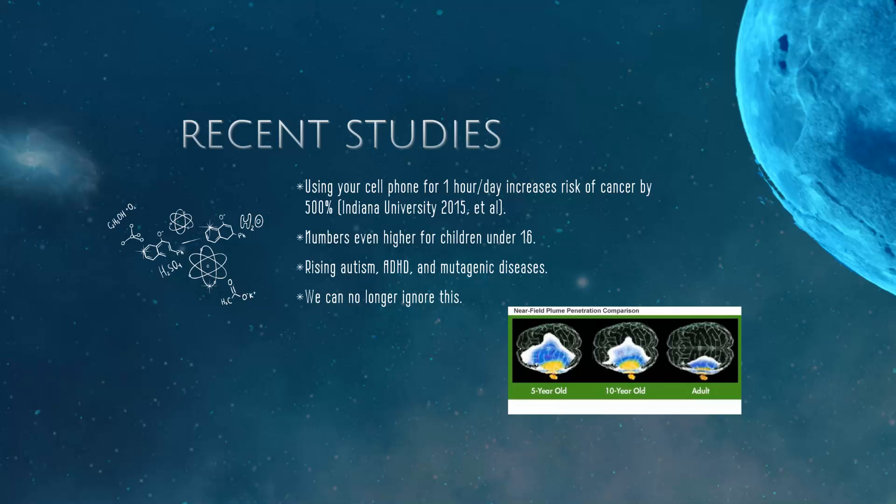These are some of the more recent studies. Using the cell phone for one hour a day increases the risk of immunogenic disease about 500%. The numbers even higher for children because the absorption is so much greater for a child. For an adult, the absorption is like 25%. For a child under five years old or five years or younger, it is approximately 75% absorption. So these are definitely some things not to ignore because we are surrounded as a society by these frequencies. They're coming from everywhere.